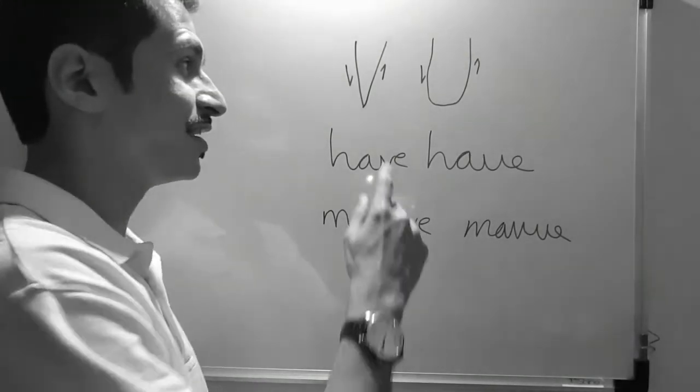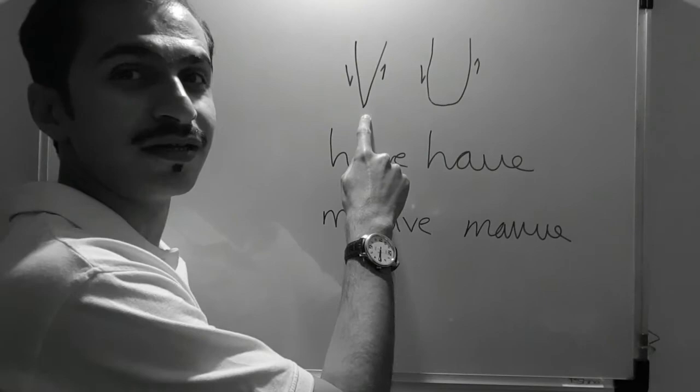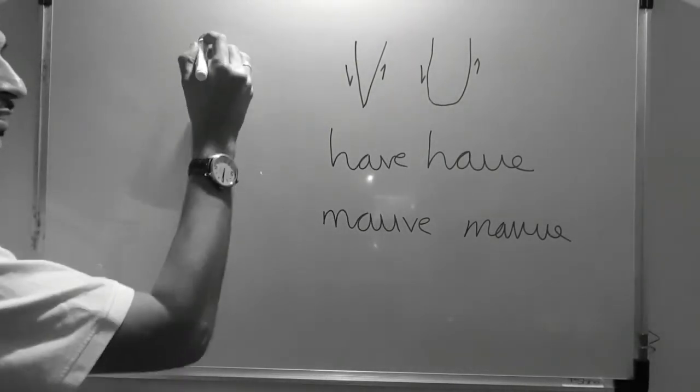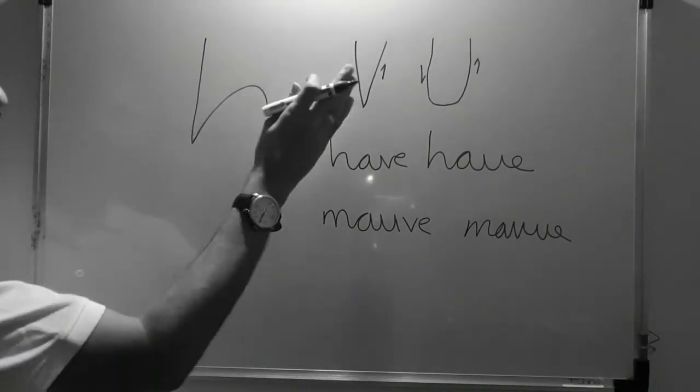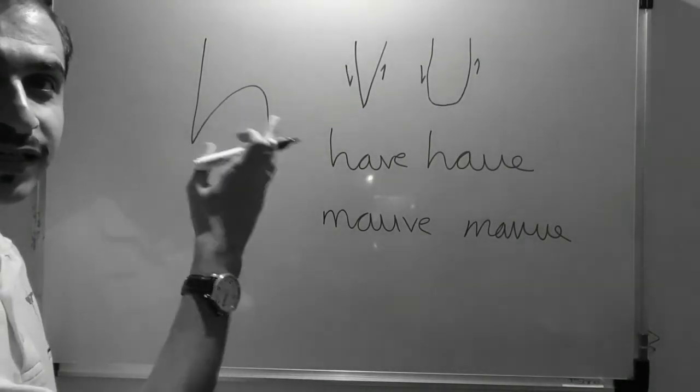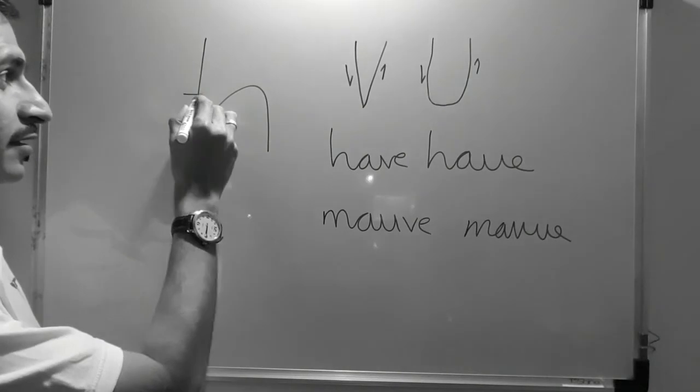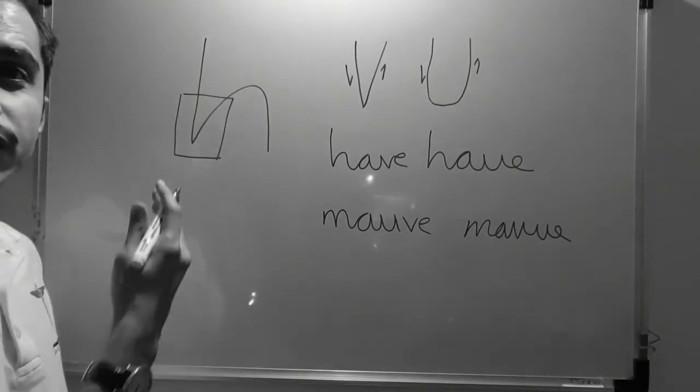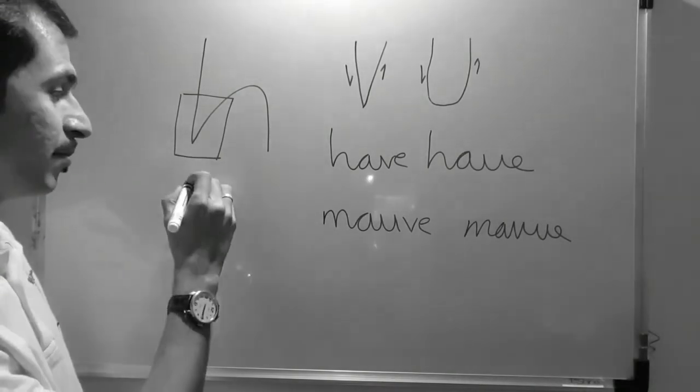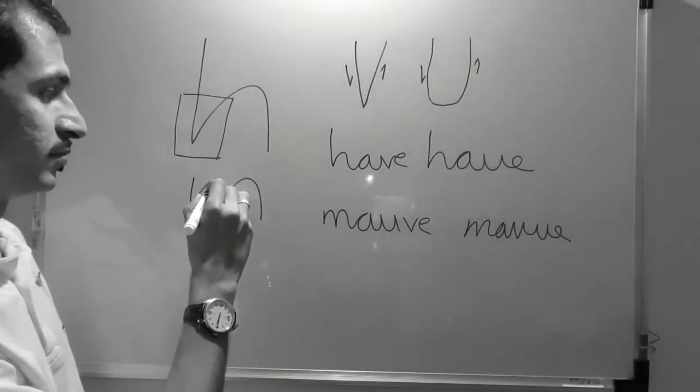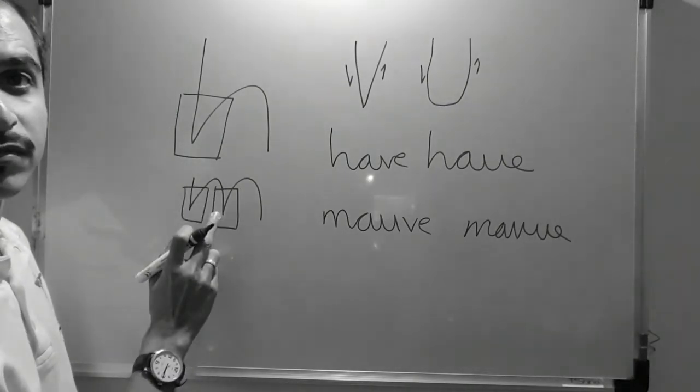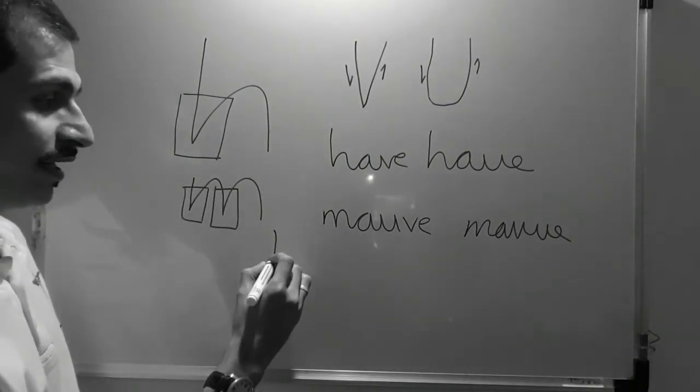You must understand that this letter formation comes very often. See the letter H. Now where do you find the letter V in the letter H? Here it is. You can find the letter V in letter M. In these two blocks. Even in letter N.